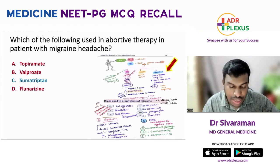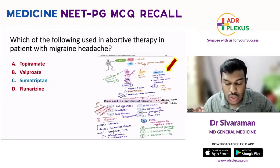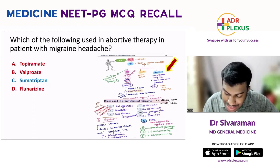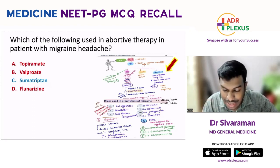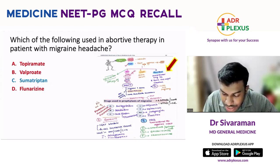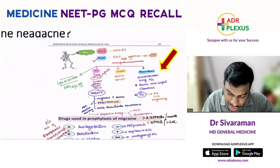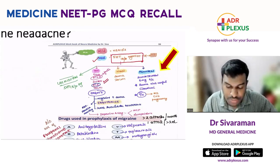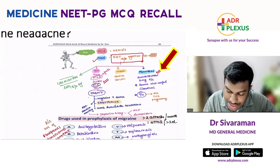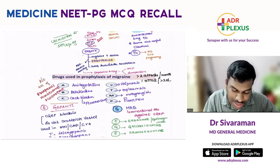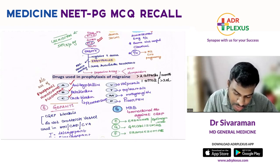The answer is sumatriptan. Sumatriptan is used as an abortive therapy in migraine headache. As we discussed in our routine class, whenever a patient comes with a migraine-like headache of moderate intensity, we try triptans, which are 5-HT1B/D agonists. Sumatriptan belongs to this class of drugs and can be given orally or parenterally. Drugs used in prophylaxis include amitriptyline, beta-blockers, flunarizine, valproate, topiramate, and methysergide.